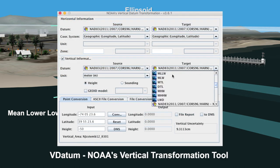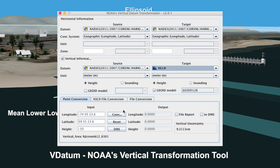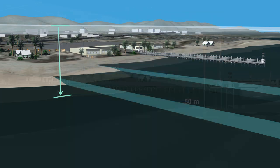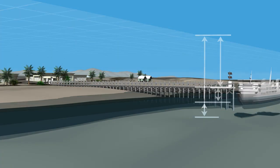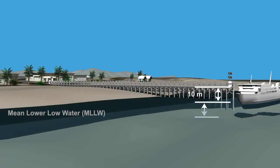Fortunately, NOAA's Vertical Datum Transformation Tool, known as VDatum, allows us to realign existing datasets from one vertical datum to another. Using VDatum to transform our heights from an ellipsoidal to a tidal datum, we see that our pier is 10 meters above Mean Lower Low Water, and the seafloor is only 5 meters below Mean Lower Low Water. This means our ship will have to have a draft less than 5 meters, or find another pier at low tide.